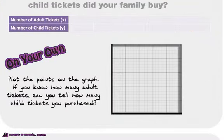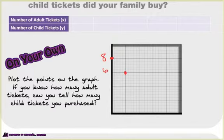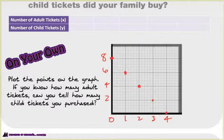Our first point was (0, 8) — right there. Our next point was (1, 6). So this is 8, 6, 4, and 2 on the y-axis, and 0, 1, 2, 3, 4 on the x-axis. Plotting each point — there, there, and there. So there is our graph. We have now taken something in standard form and graphed it.